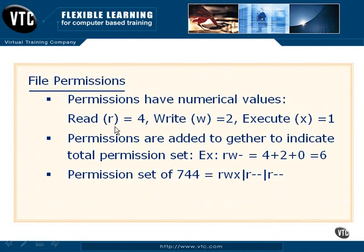These R, W, and X permissions also equate to numerical values. This is made for simplicity so the operating system can read it and administrators can get a quick glimpse of what permissions are available. We add those permissions together to give a total value to a particular group or user. In the example here, we have a permission set of 744 — 7 being 4 plus 2 plus 1, meaning the owner has basically full control.